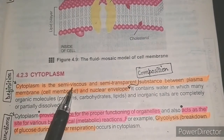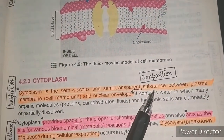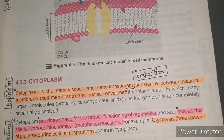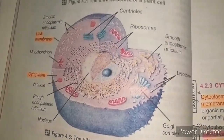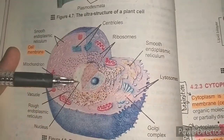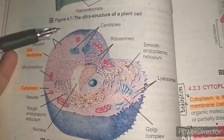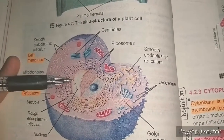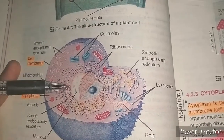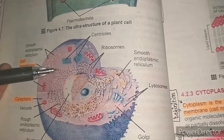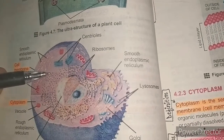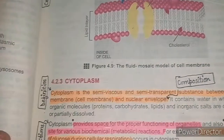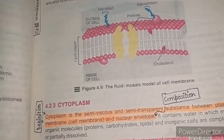Cytoplasm is a semi-viscous and semi-transparent substance between the plasma membrane (i.e., cell membrane) and the nuclear envelope. In the diagram, this is the nucleus, this is the nuclear membrane, and this is the outermost layer — the cell membrane. Semi-viscous means it is not too thick and not too thin, and semi-transparent means it is very clear.